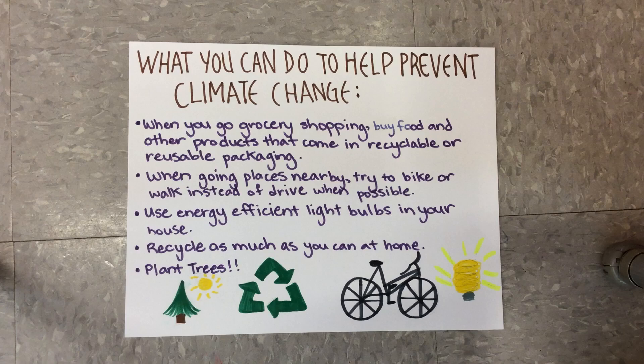Here are some things that you can do to help prevent climate change. When you go grocery shopping, buy food and other products that come in recyclable or reusable packaging. When going places nearby, try to bike or walk instead of drive when possible. Use energy-efficient light bulbs in your house. Recycle as much as you can at home. And plant trees.